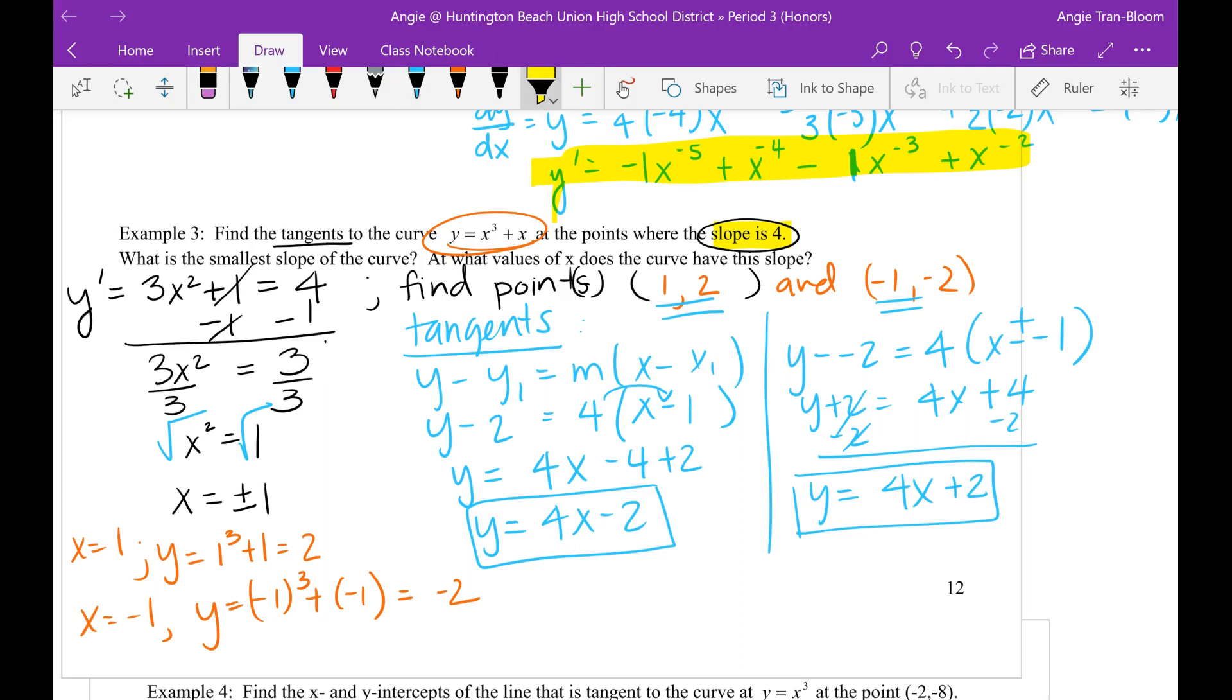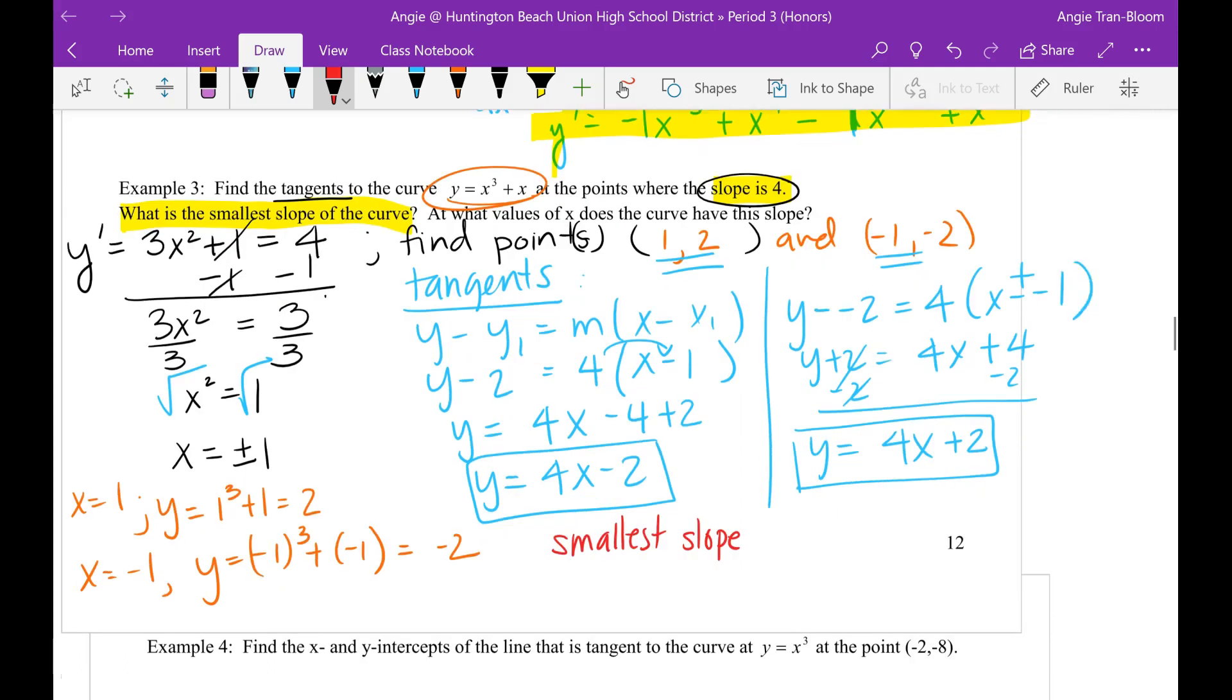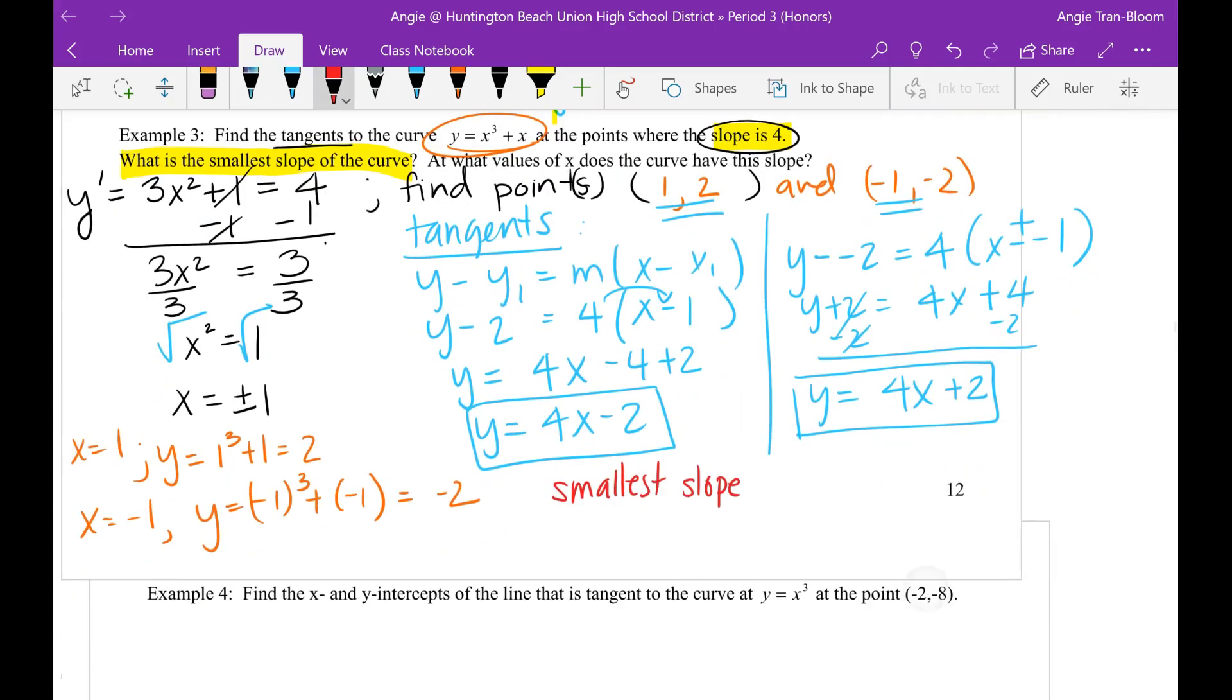Now let's move on to the next question here. What is the smallest slope of the curve? Now let's try to understand that question. If you are seeking for the smallest slope, that means I need to know all the slopes, right? What one equation that will give you all of the slopes?